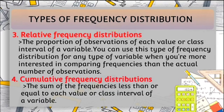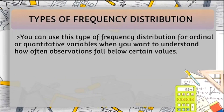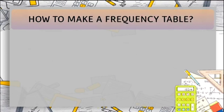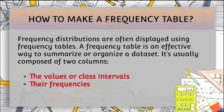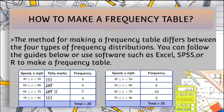The last type is cumulative frequency distribution. It is the sum of the frequencies less than or equal to each value or class interval of a variable. You can use this type for ordinal or quantitative variables when you want to understand how often observations fall below certain values. Next is how to make a frequency table. Frequency distributions are often displayed using frequency tables. A frequency table is an effective way to summarize or organize a dataset. It is usually composed of two columns: the values or class intervals, and their frequencies. The method for making a frequency table differs between the four types.